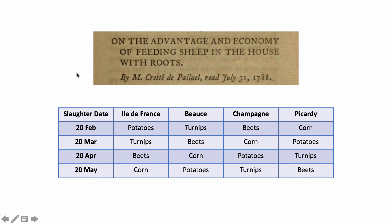However, Ronald Fisher was not the first person to use a Latin square design in a statistical experiment. Researchers have credited a paper by a French scientist named Crite, published in 1788, as the first instance of a Latin square design appearing in a publication. This paper is publicly available online and the link will be in the description. In the next part of the video I'm going to describe his experiment.